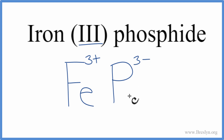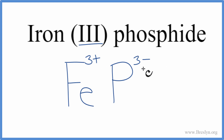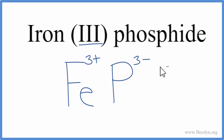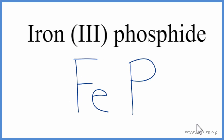So these charges should add up to zero, because iron-3-phosphide is a neutral compound — it's not an ion. With 3+ and 3−, that gives us a net charge of zero, so the formula for iron-3-phosphide is FeP.